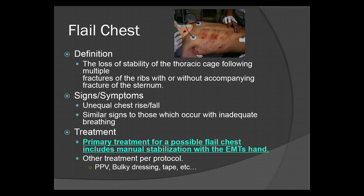Flail chest segments: the definition of a flail chest is the loss of stability of the thoracic cage following multiple fractures of the ribs, with or without accompanying fracture of the sternum. The signs and symptoms are going to be unequal chest rise and fall, as well as similar signs to those which occur with inadequate breathing — retractions and such. Treatment for a possible flail chest includes manual stabilization with the EMT's hand — gently hold your hand against the segment. Other treatments are per protocol — more often than not, positive pressure ventilation, bulky dressings, tape, et cetera.